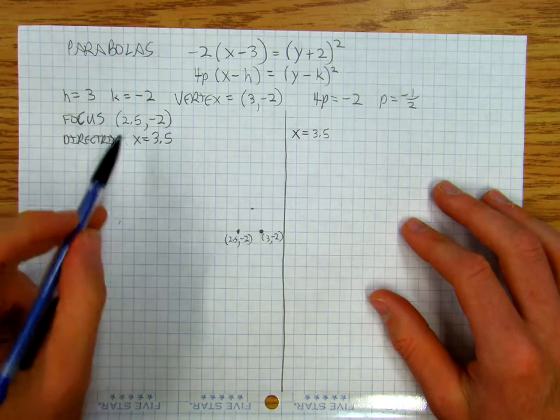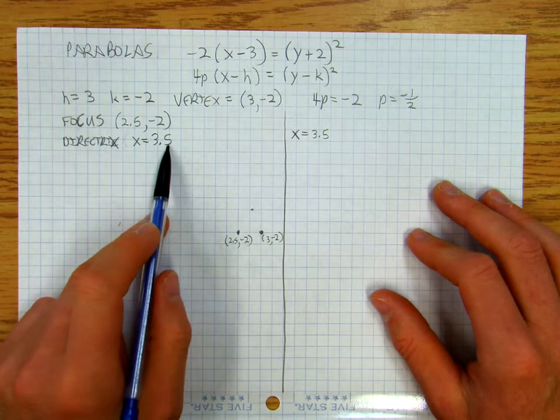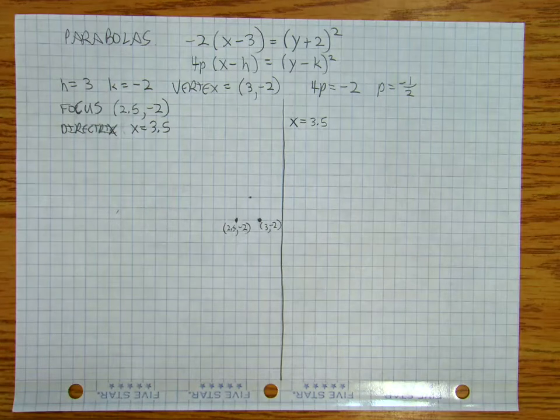So I've got a focus of 2.5, negative 2, a directrix of 3.5, and a vertex of 3, negative 2.